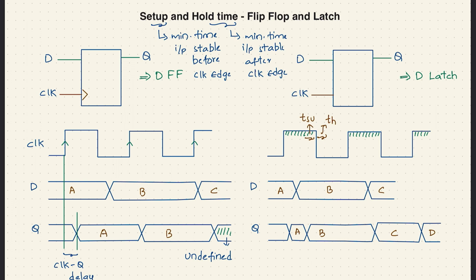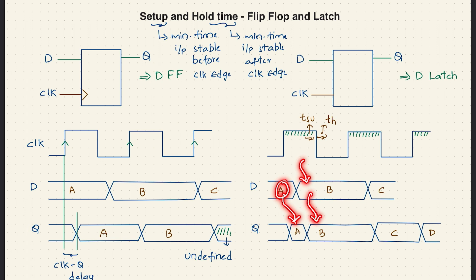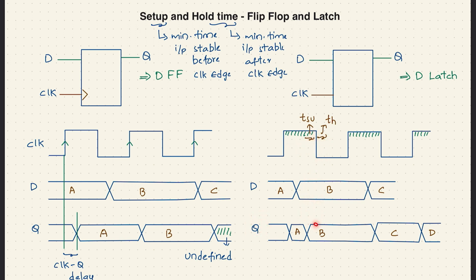Looking at a timing waveform for the latch — this is our input D changing in a certain manner. Initially we don't know the output. Whenever there is a positive level, the output Q will replicate D with some delay. We got A here and B there. At the falling transition, if input B is stable before and after, the output holds B. Similarly for the next cycle, input C is stable before and after the transition, so Q remembers C.